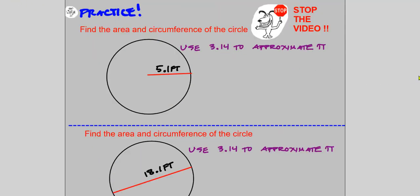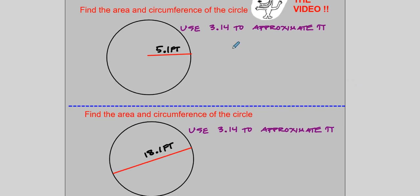So now I'll stop the video, and I want you to find the area and circumference of both practice circles — find the exact and the approximate for both area and circumference, using 3.14 to approximate pi. Stop the video, and when you're done, turn it back on and we'll check your work. The first one has a radius of 5.1 feet. The circumference of the circle is 2·pi·R.